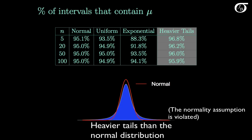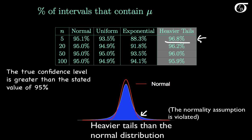Let's look at a different violation of the normality assumption. Here we're sampling from a distribution that has heavier tails than the normal distribution, but it is symmetric. For samples of size 5, 96.8% of the simulated intervals captured the true value of mu, so the true confidence level is actually a little bit greater than the stated 95%. But once again, as the sample size increases, we see the percentage of intervals capturing mu getting closer and closer to the stated value of 95%.